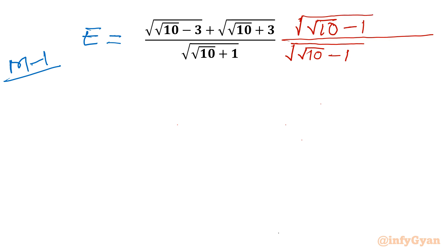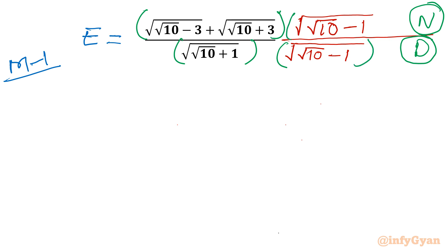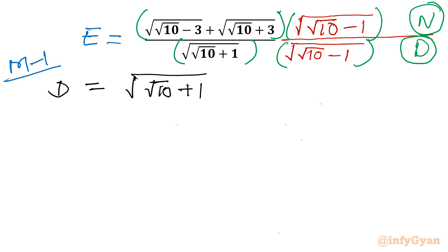I will call the numerator N and the denominator will be the product of those two square roots. The denominator D will be equal to square root of (√10 plus 1) times square root of (√10 minus 1).